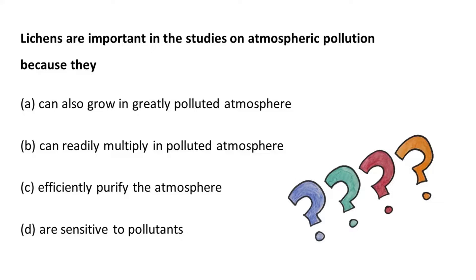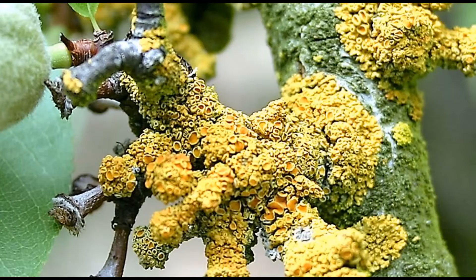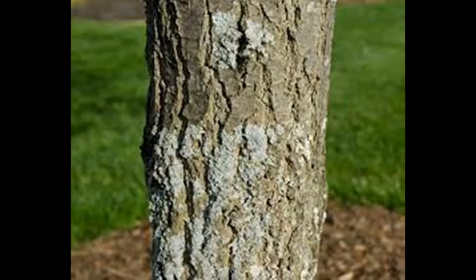Lichens are sensitive to pollutants — that is the answer. Lichens are bioindicators. Lichens are a complex life form with a symbiotic relationship. In this symbiotic relationship, they obtain water and nutrients. They can survive when they have water and nutrients, but lichens are sensitive to polluted environments.